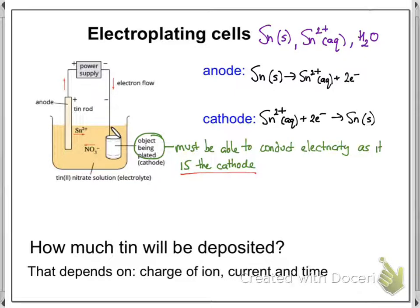The object to be plated must be able to conduct electricity, as it is the cathode. It's connected via wire to the negative part of the power supply. It's not connected to a cathode — it is the cathode. So whatever you want to be plated in electroplating must be able to conduct electricity.